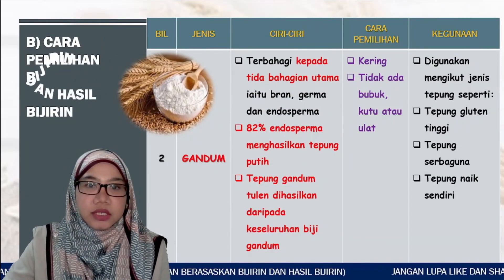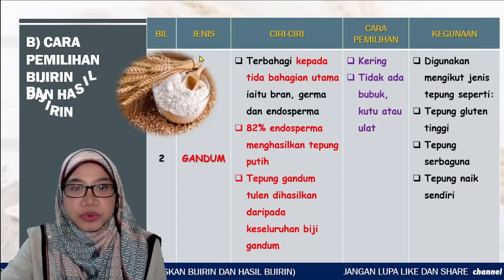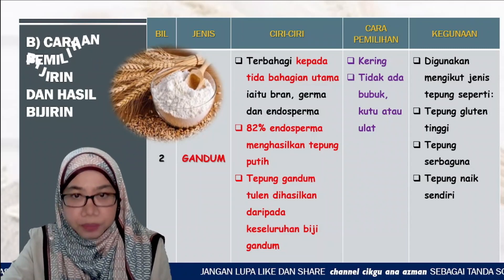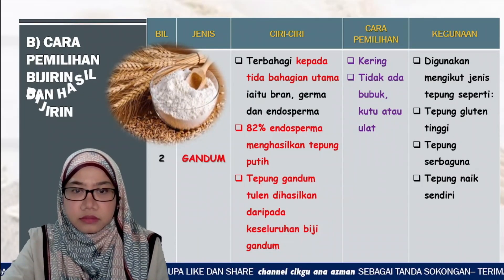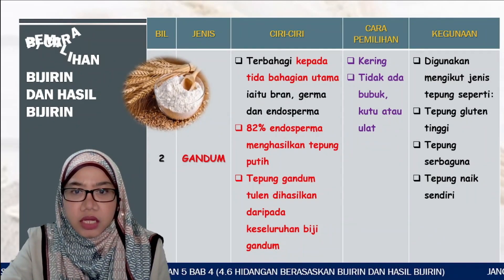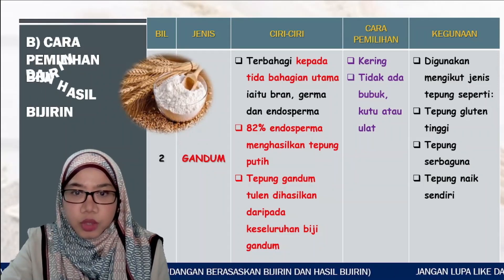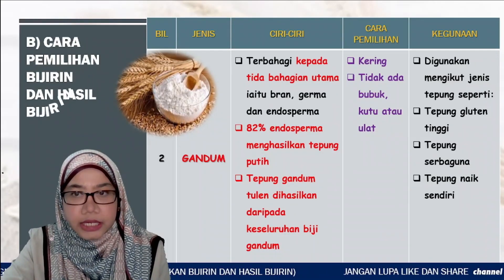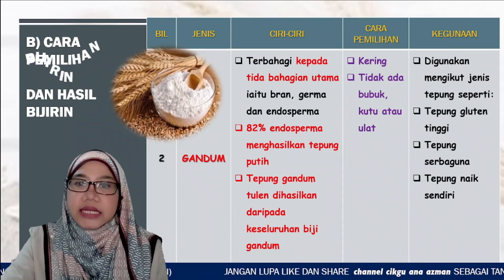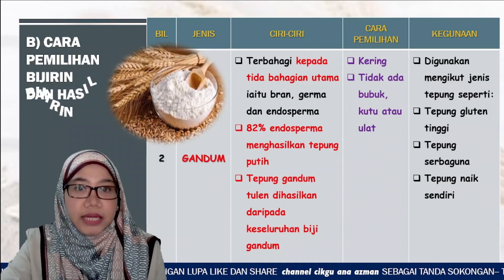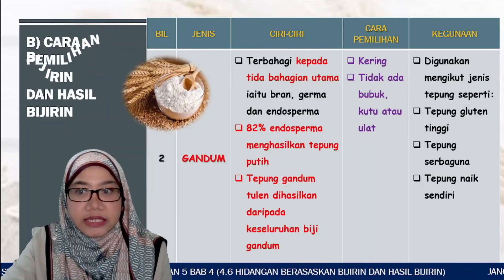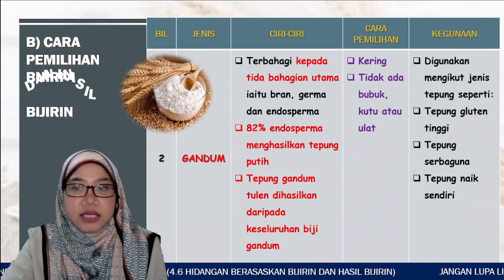Bijirin yang kedua ialah gandum. Gandum terdiri daripada 3 bahagian utama iaitu bran, germ dan endosperma. 82% endosperma menghasilkan tepung putih. Tepung gandum tulin dihasilkan daripada keseluruhan biji gandum. Cara pemilihan gandum sama seperti beras: mestilah kering, tidak ada bubuk atau ulat. Biasanya gandum digunakan mengikut jenis tepung seperti tepung gluten tinggi, tepung serba guna dan tepung naik sendiri.